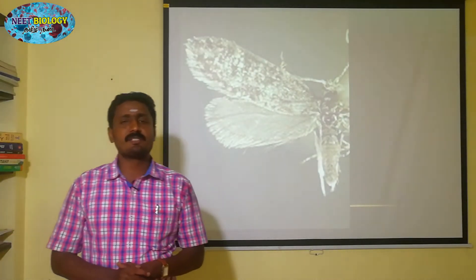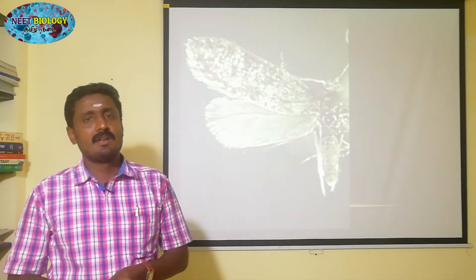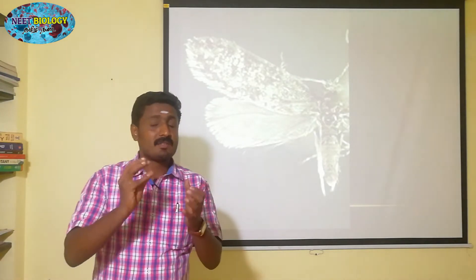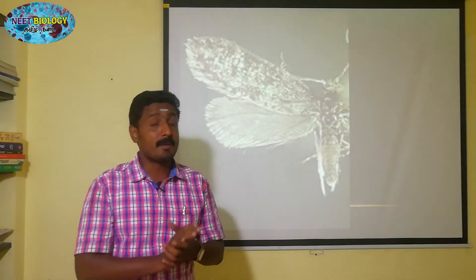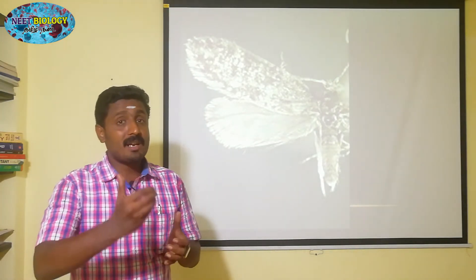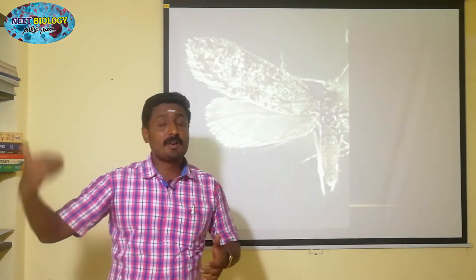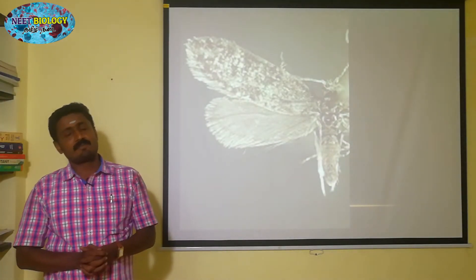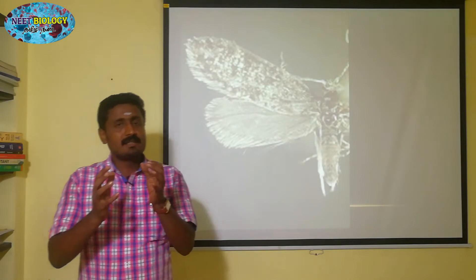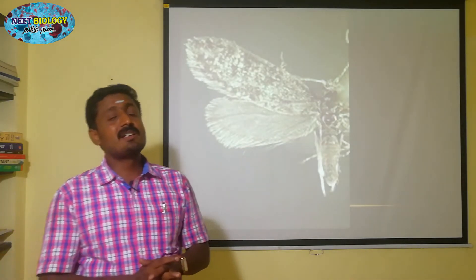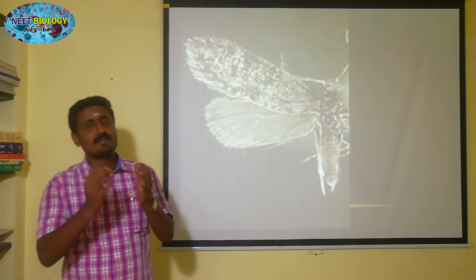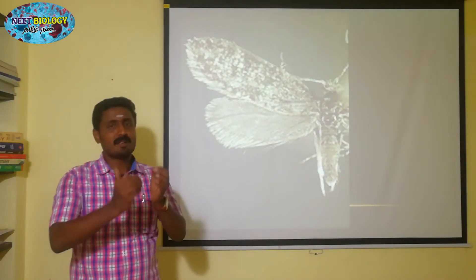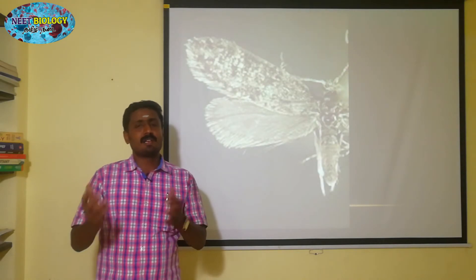Through natural parthenogenesis, the larvae from parthenogenesis are produced for the female species. Due to temperature conditions and normal growth conditions, that larva develops into a male producer.